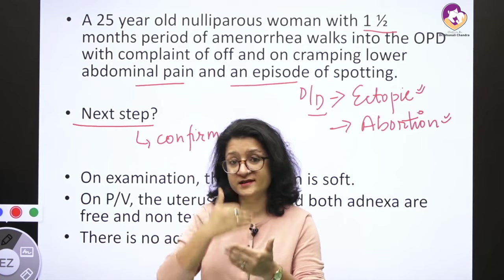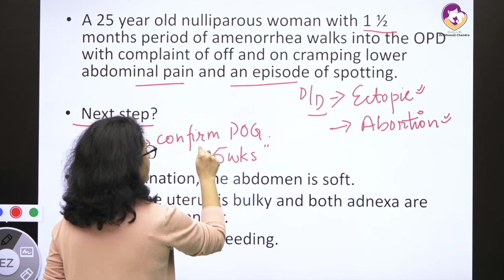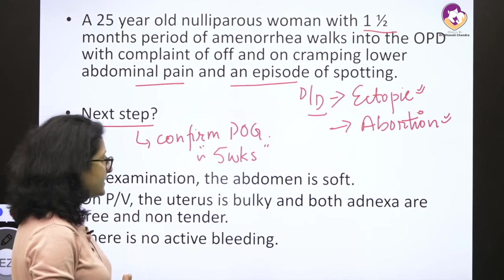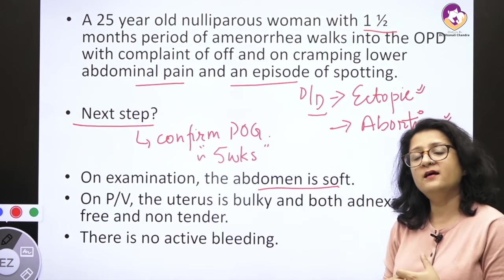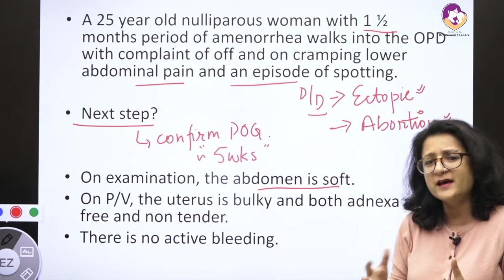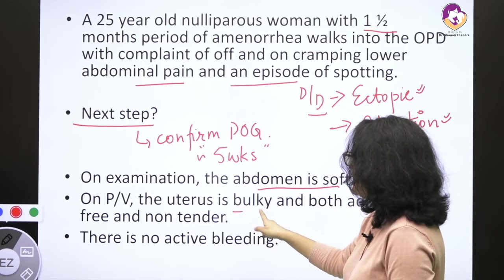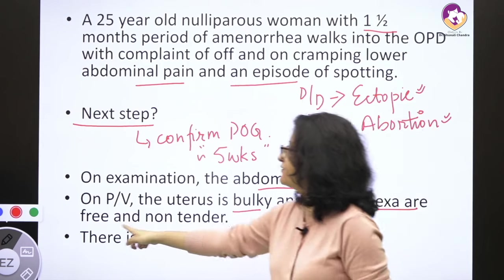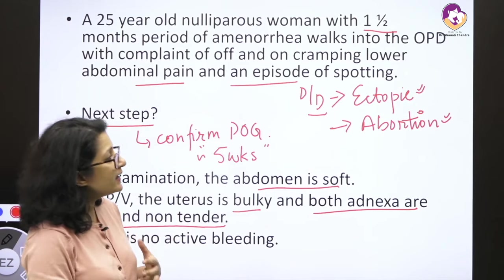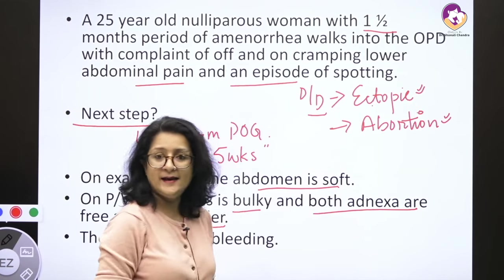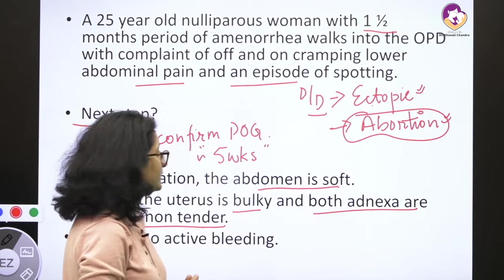Let's say in this case the woman is five weeks pregnant. On examination, the abdomen is soft, which goes against the diagnosis of ectopic — in ectopic, there should be some per-abdominal tenderness. On PV, the uterus is bulky and both adnexa are free and non-tender. So there is no adnexal tenderness, no adnexal mass. The diagnosis of ectopic becomes less likely, supporting a diagnosis of abortion.